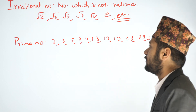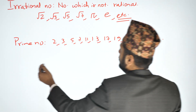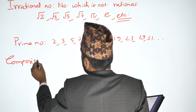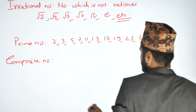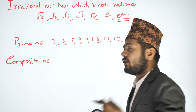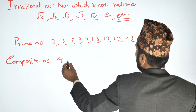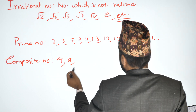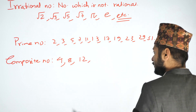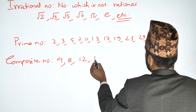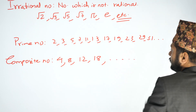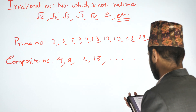The opposite of prime numbers are composite numbers. Composite numbers are those which are divisible by more than just 1 and themselves. For example: 4 is divisible by 1, 2, and 4; 8 is divisible by 1, 2, and 4; 12 is divisible by 1, 2, 3, 4, and 6; 18 is divisible by 1, 2, 3, 6, and 9. These are composite numbers.